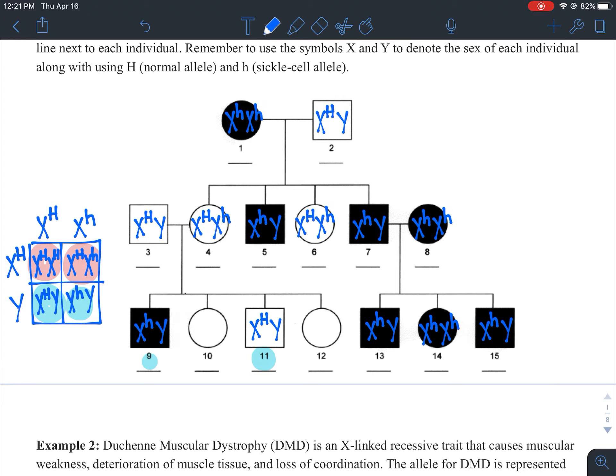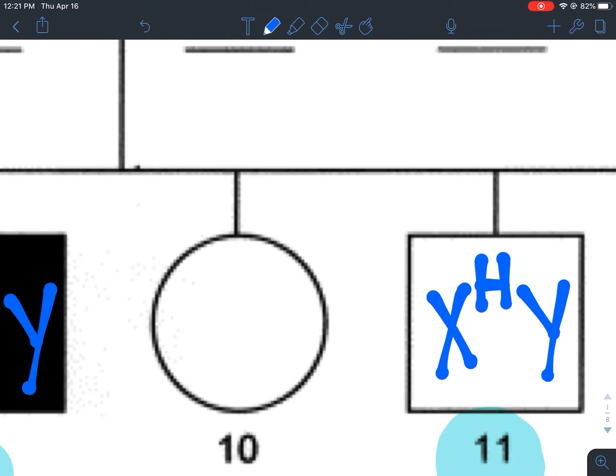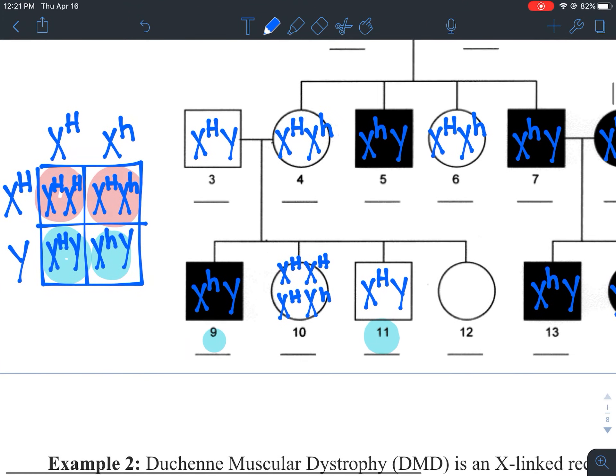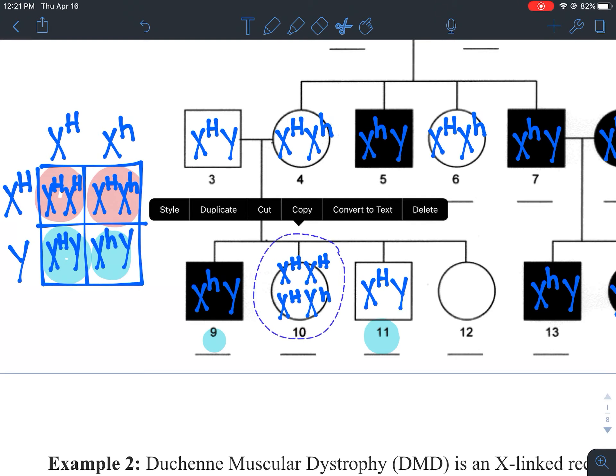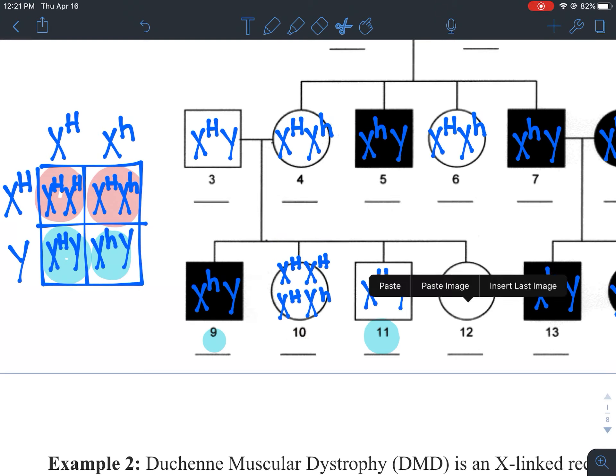There is no way for us to determine for individual 10 and 12 whether or not they were homozygous dominant or if they were a heterozygote for this. And because of that, we have to write down both X capital H X capital H and X capital H X lowercase h just because there's no way for us to know based on their phenotype, which is that they are normal, which version they actually are. And so I'm going to paste that in for both daughters.